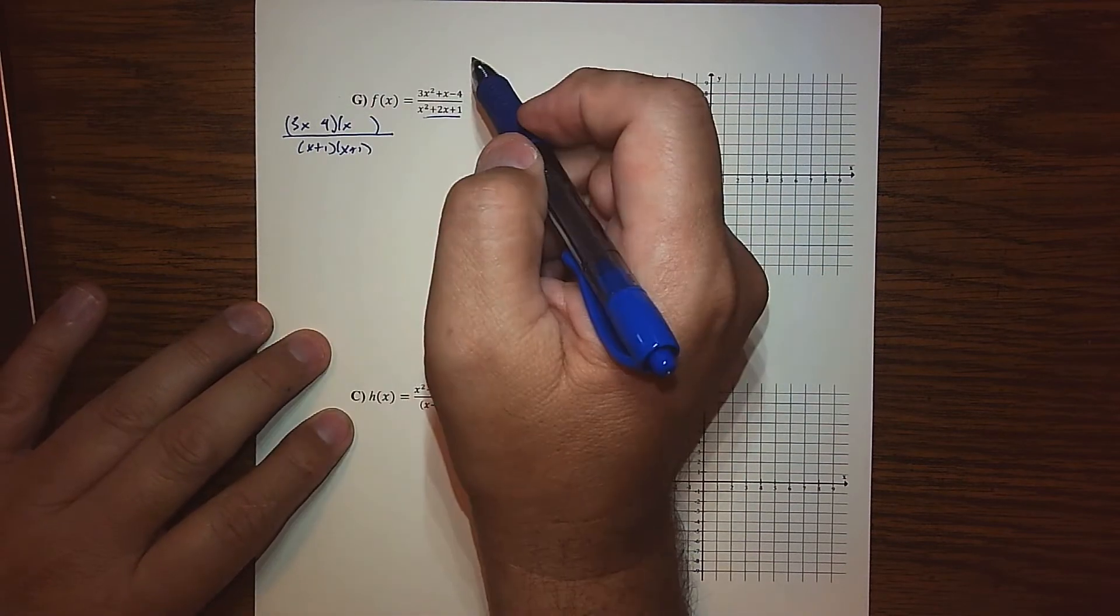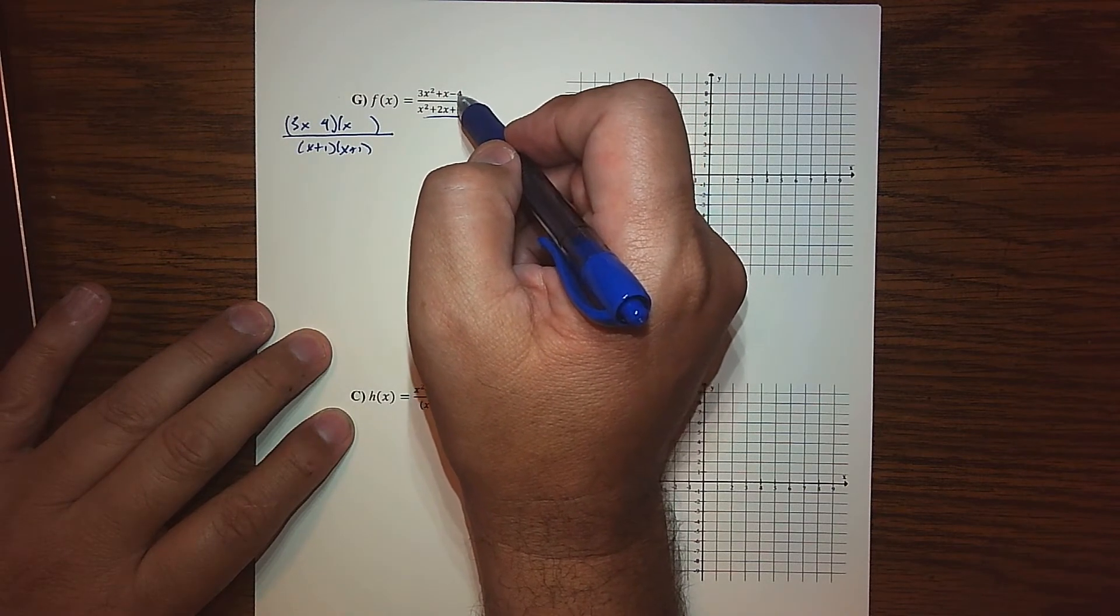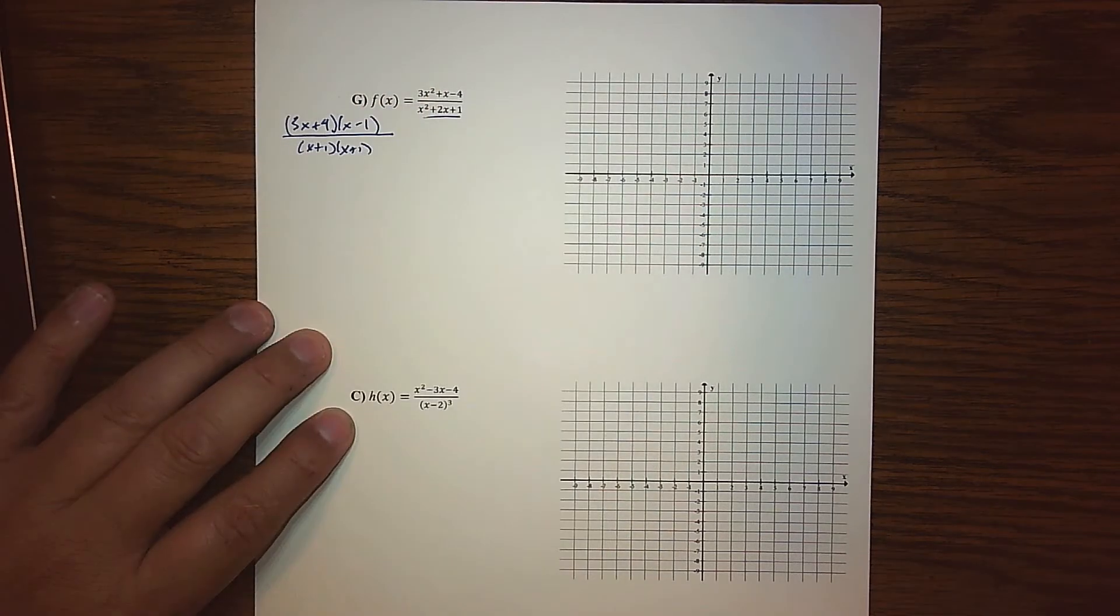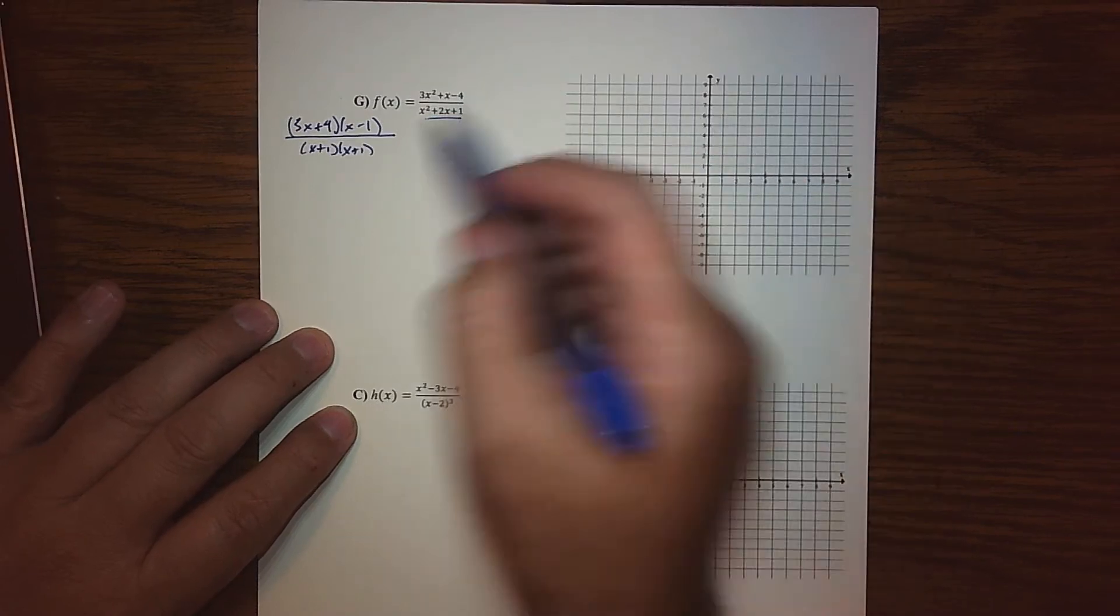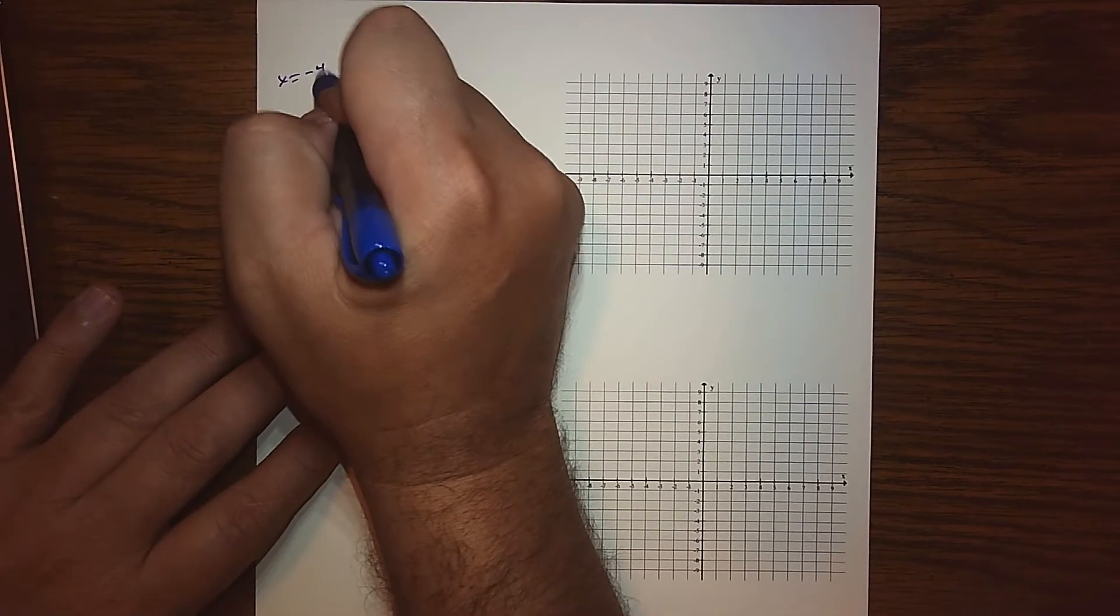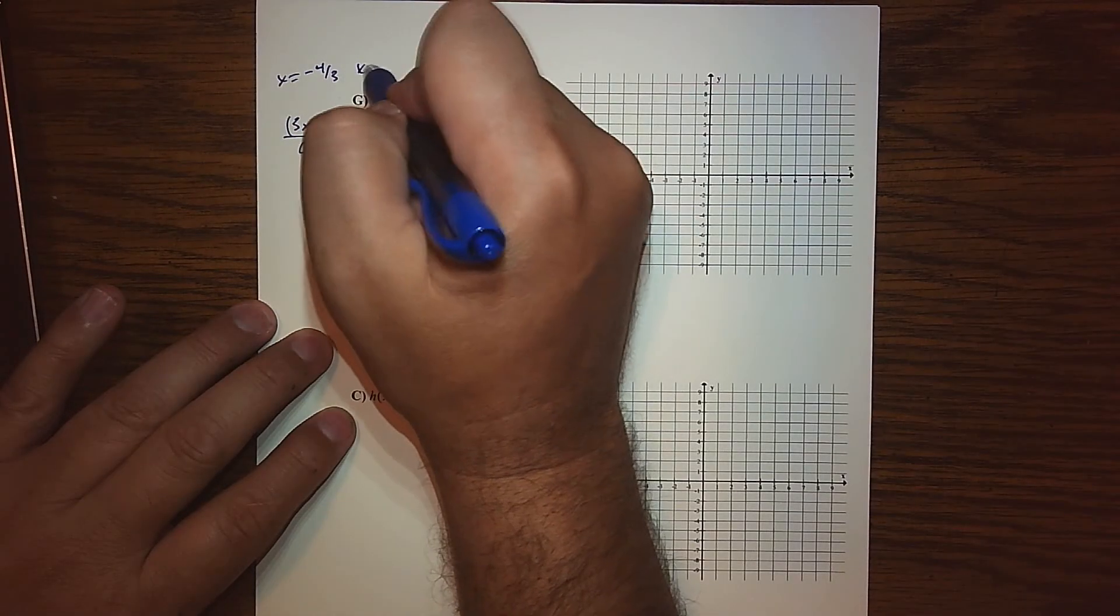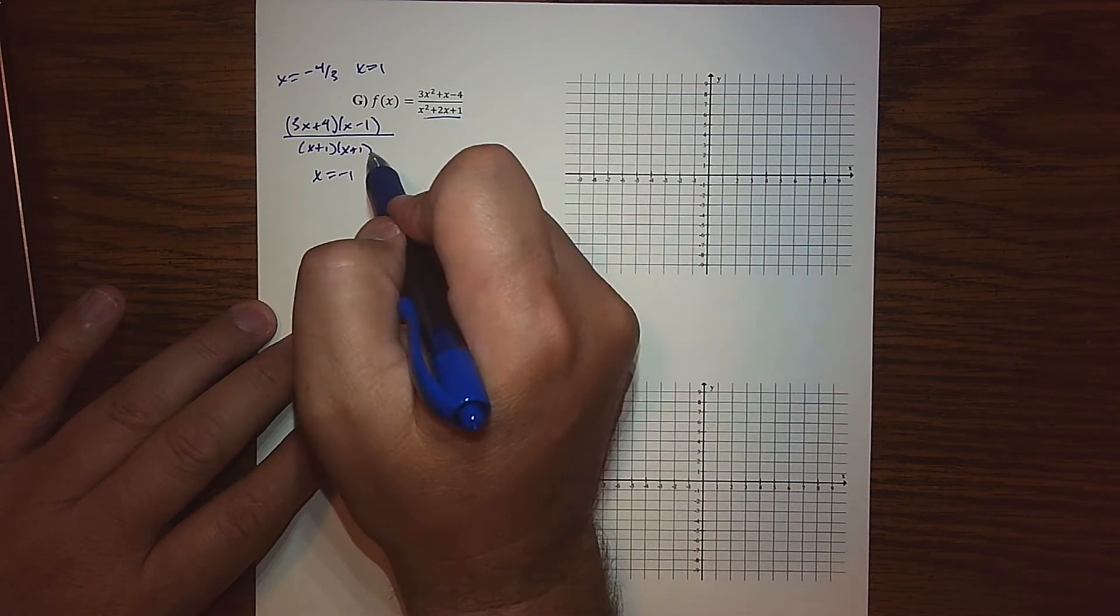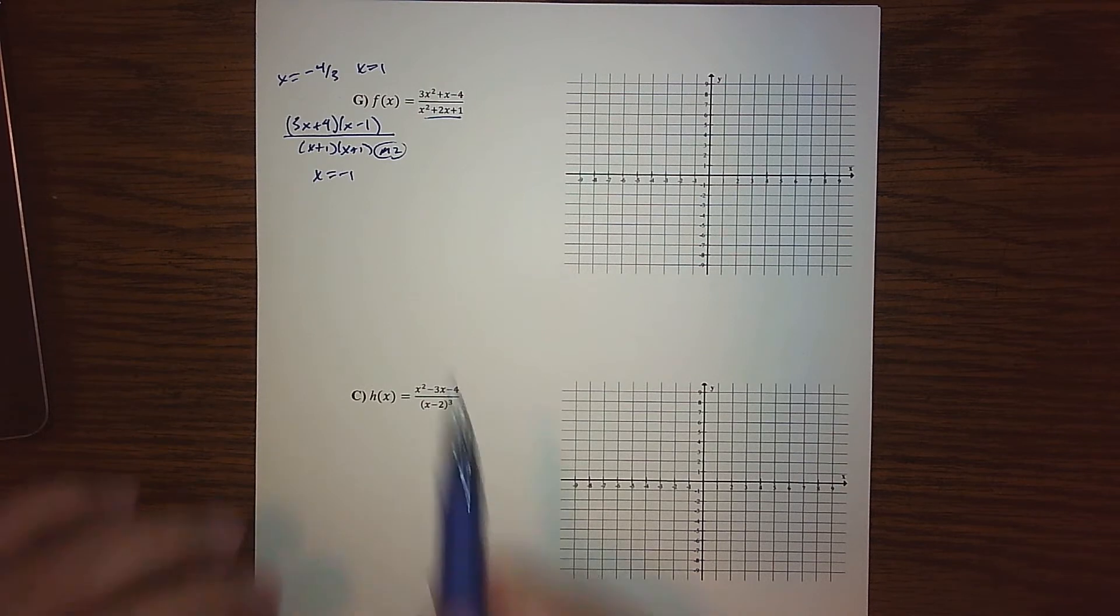That's it, 4x minus 3x, yep we got it right. So we have basically upstairs, my zeros are negative 4 and 3 over 3, x equals 1. Down below we have x equals negative 1 and it's of multiplicity 2. At this stage of the game, none of my zeros match up, so there's no holes.